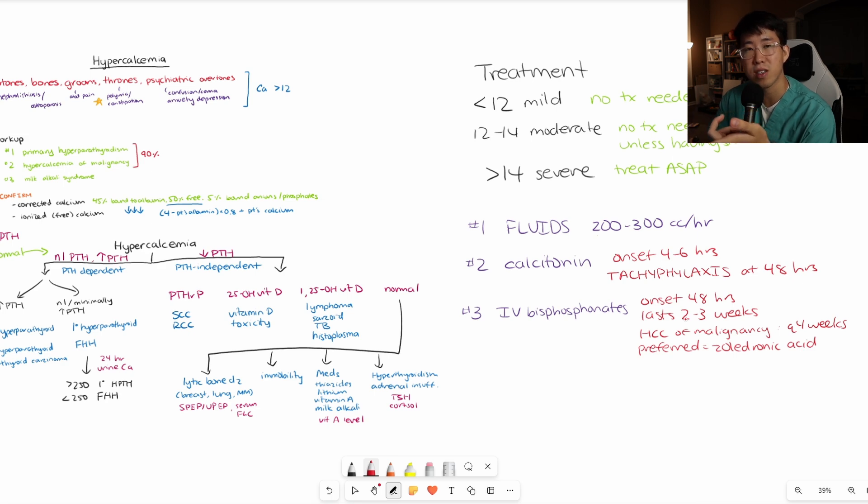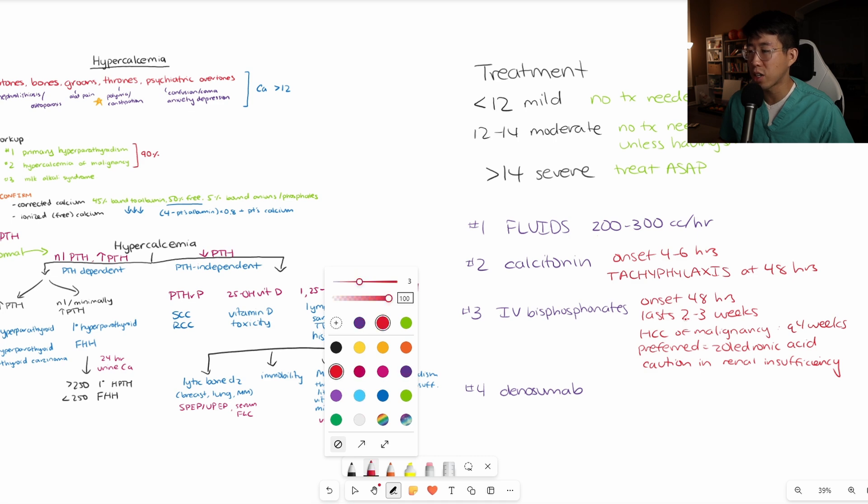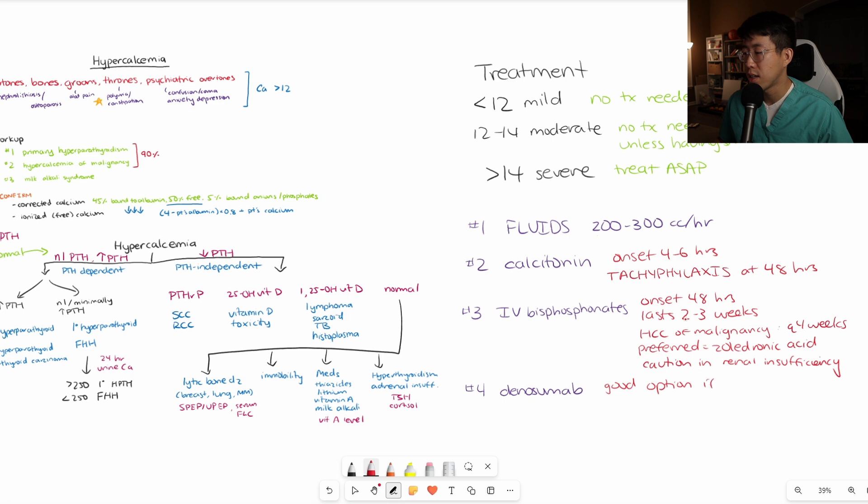Remember your side effects for bisphosphonates: osteonecrosis of the jaw, atypical femur fractures, and be careful in patients with renal insufficiency. What can you use if somebody has renal insufficiency? There's a very similar acting medication called denosumab. This is a good option if the patient has renal insufficiency or if they have an allergy to bisphosphonates. One thing to note about denosumab is there's an increased risk for hypocalcemia.